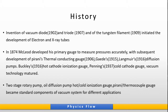Invention of the vacuum diode, triode, and tungsten filament initiated the development of electron and X-ray tubes, which were used in electron microscopes. Electron microscopes primarily required vacuum in order to avoid sample and air molecule interaction. In 1874, McLeod developed his primary gauge to measure pressure accurately.